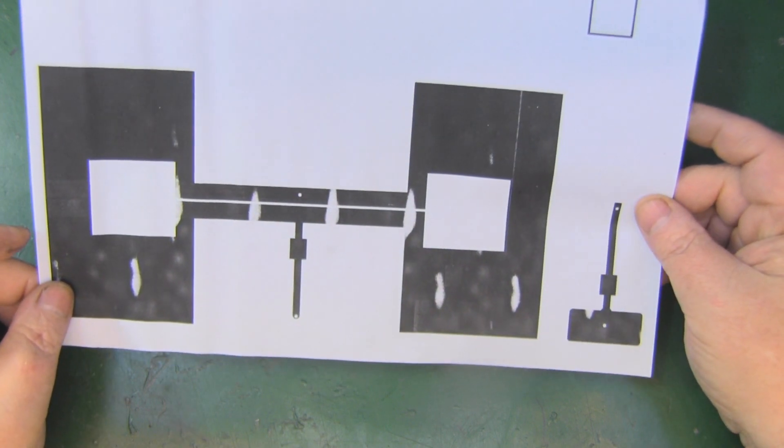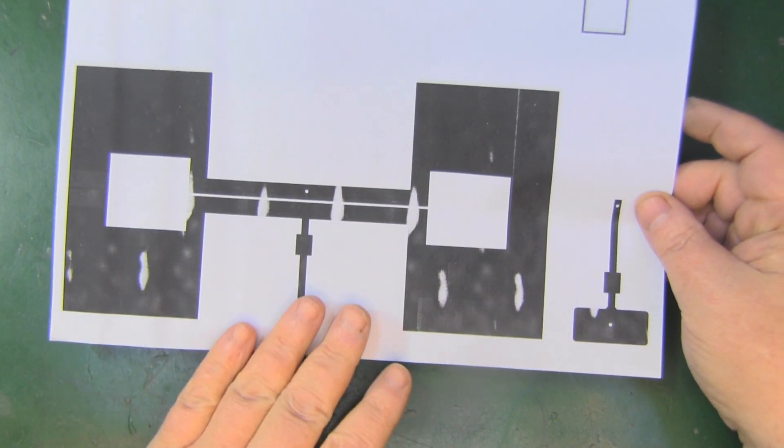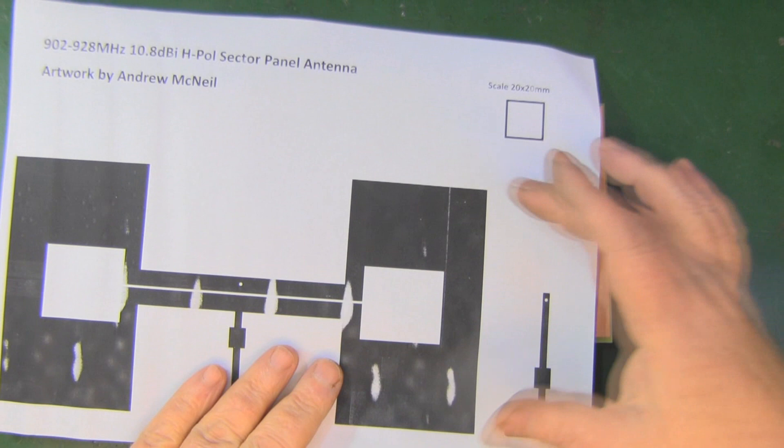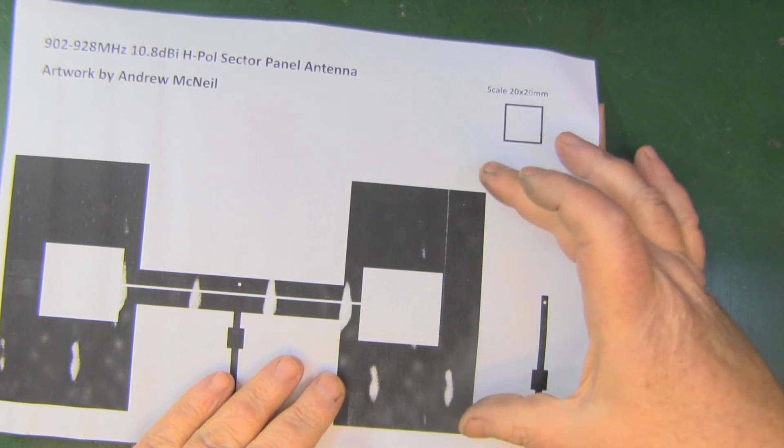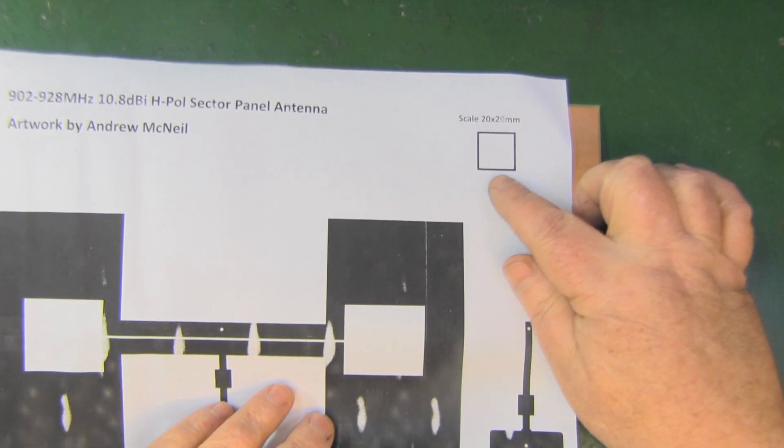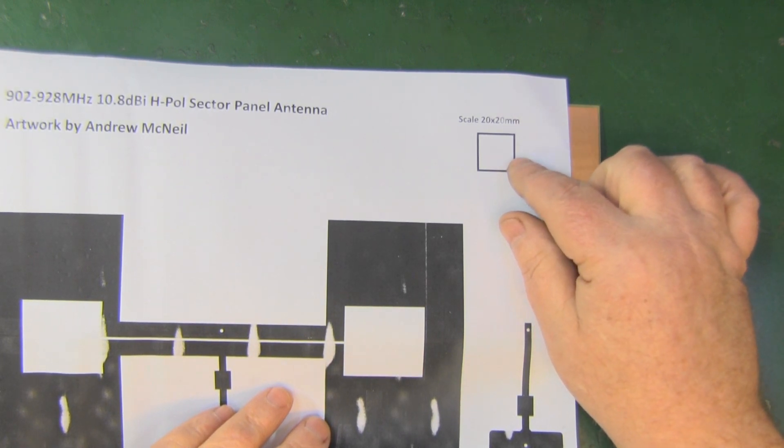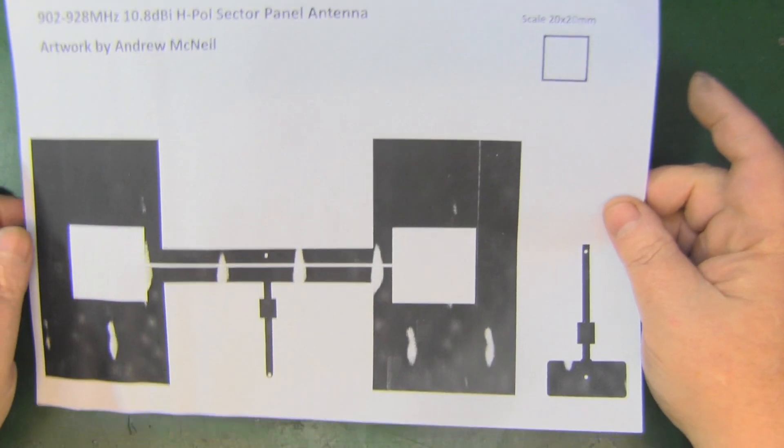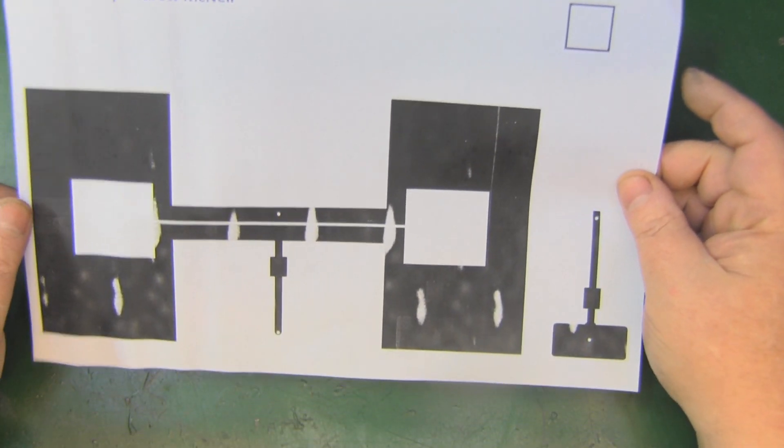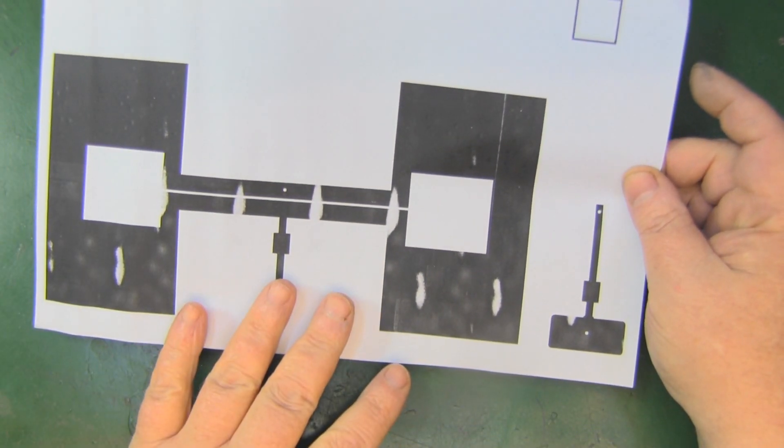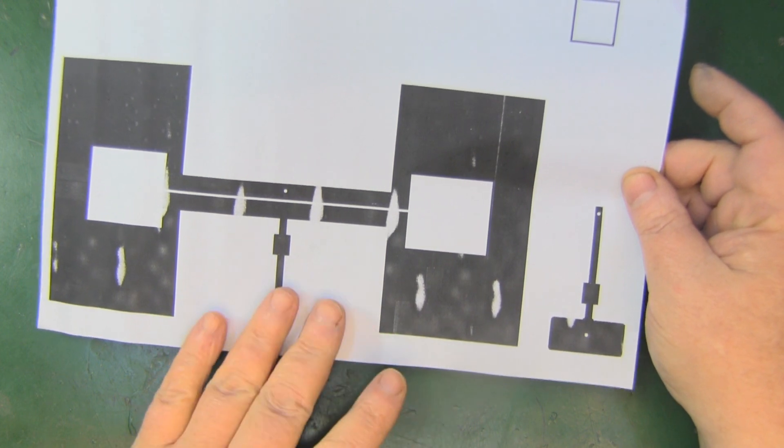Now I have made a copy of the artwork if you want to download this yourself. I need some new toner in my printer, but the artwork is here. I haven't put measurements on this, you can do that yourself. Basically you've got a scale here, and as long as that measures 20 millimeters by 20 millimeters, you've got your scale set correct on your printer.